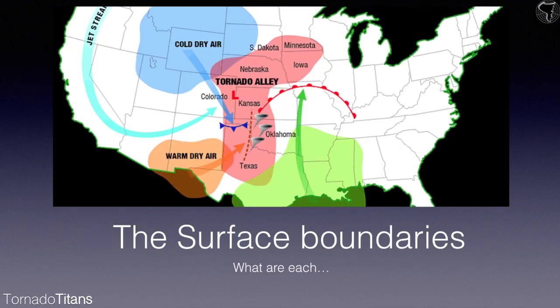Let's talk about warm fronts. We looked at this chart in the first lesson — it shows all the various surface boundaries. I wanted to revisit it since we're really wrapping up the surface boundaries section. We've talked about dry lines and the triple point. We haven't talked about cold fronts that much; we'll visit them here in a bit, and I'll talk about why you might want to chase those since we don't have a lesson specifically for that.